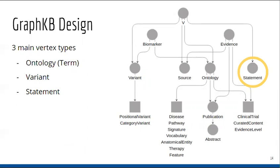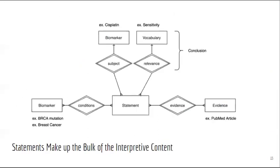The final vertex type to cover is statements. These make up the bulk of the interpretive content in GraphKB. There are four fields of interest in our statement model. The first is the conditions — the conditions that must be present for the statement to apply, which can be the disease diagnosis, the detected variant, or a prior treatment. The subject and the relevance are used to distinguish the impact or effect of the statement, together forming the statement conclusion. The subject, in this case Cisplatin, is the vertex to which the relevance — in this case sensitivity — applies. Finally, the fourth field is the evidence, the source used to support the rest of the statement, most often a journal article given via its PubMed ID. In the example above, we interpret this statement as saying: given a BRCA mutation and a diagnosis of breast cancer, we expect sensitivity to Cisplatin.